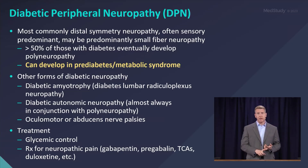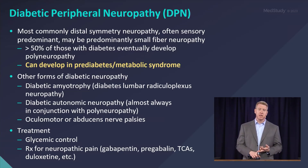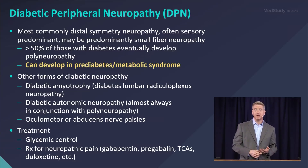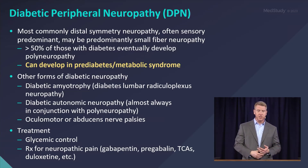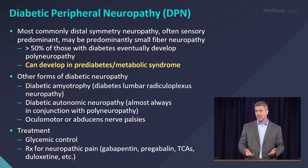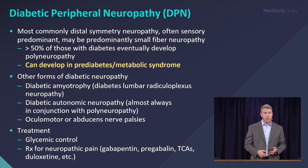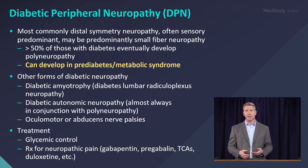It's common for diabetes to affect the peripheral autonomic nerves. Generally not in isolation, but in patients with diabetic neuropathy, especially as the neuropathy gets more severe, autonomic findings are very common. Most commonly this is orthostatic hypotension, but they can develop other problems like impotence, constipation, impaired sweating, et cetera.